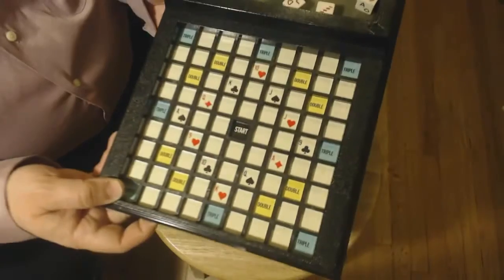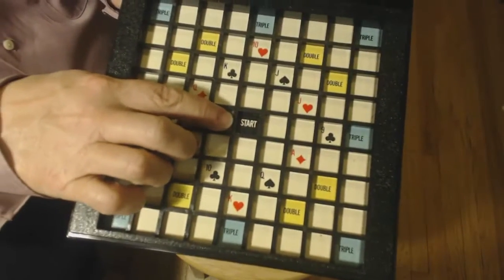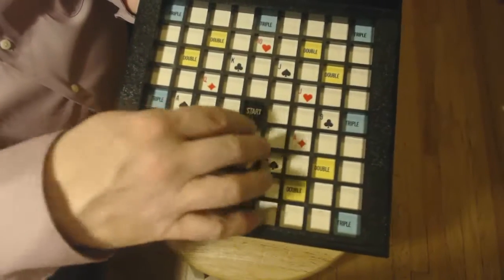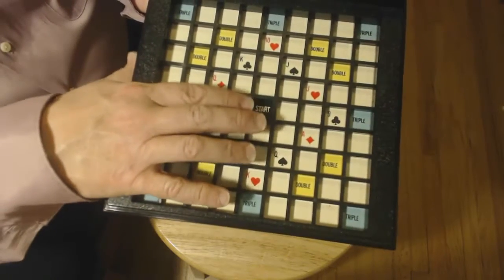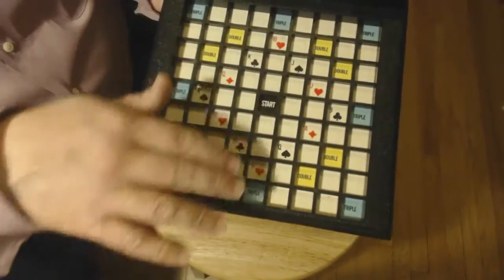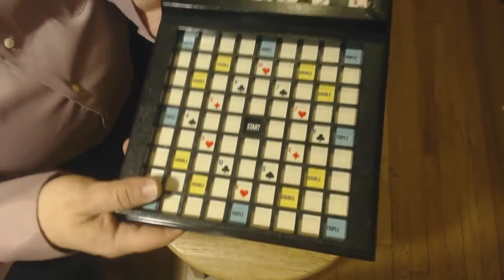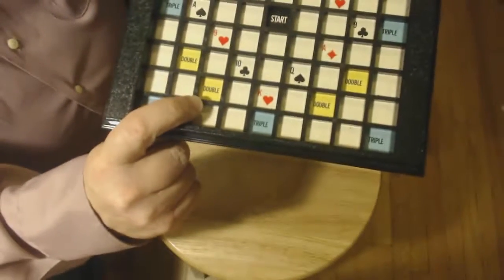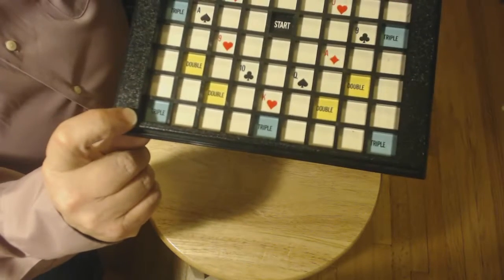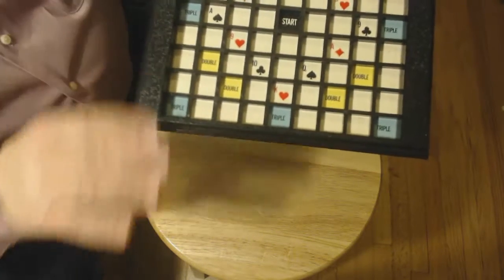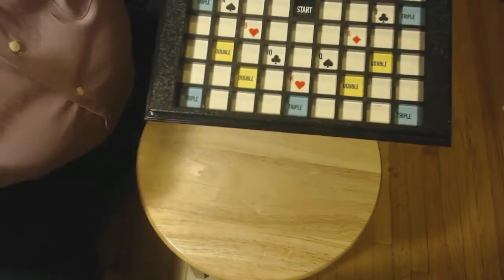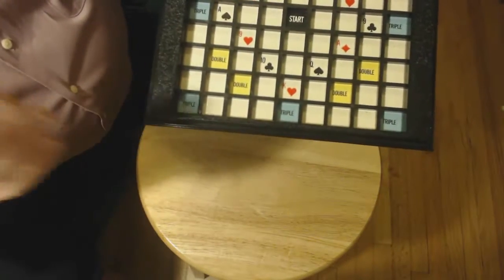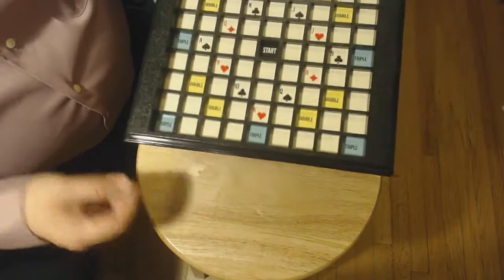Now, on the board, there is a start point right in the middle. Any of the dice that you lay down have to hit the start space. And you can go, of course, like I say, rank or file, doesn't matter. You'll notice on here there are double spaces and triple spaces, just like in Scrabble. And that's pretty self-explanatory, where if you have a poker hand that lands on a double or a triple, you add up the score and you double it or triple it.